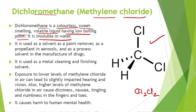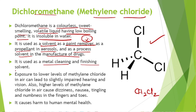These points are very important — you have to remember them clearly. Dichloromethane is used as a solvent and as a paint remover. It is also used as a propellant in aerosols, as a process solvent in the manufacture of drugs, and as a metal cleaning and finishing solvent.